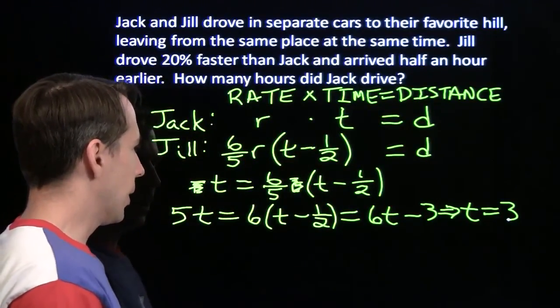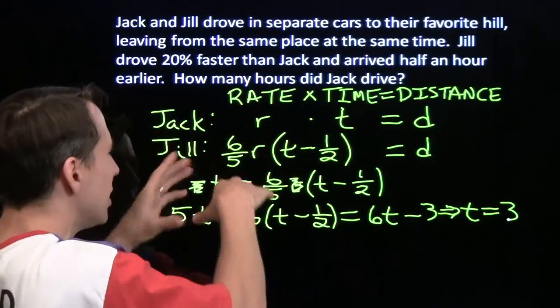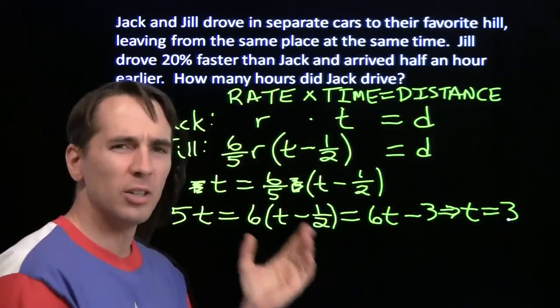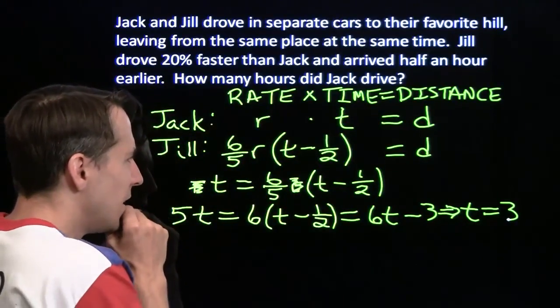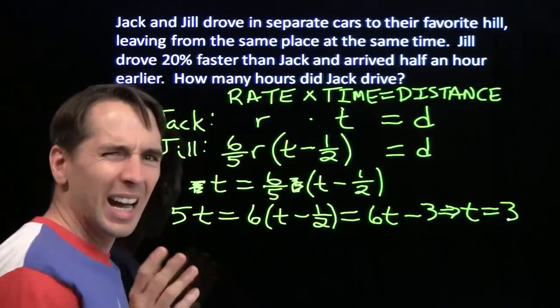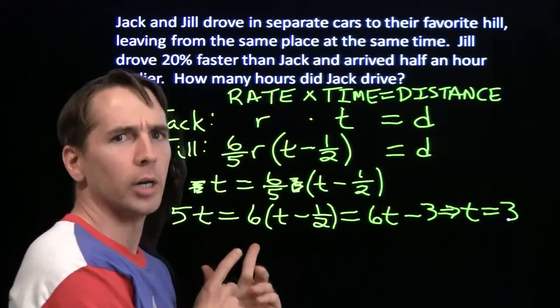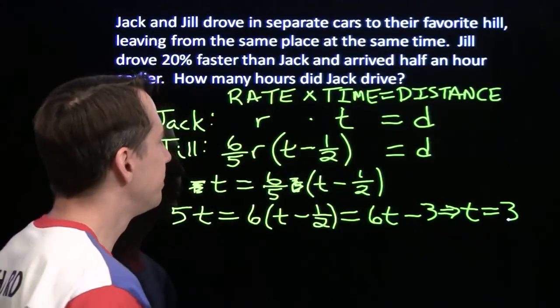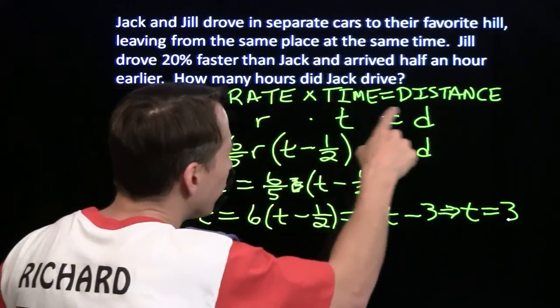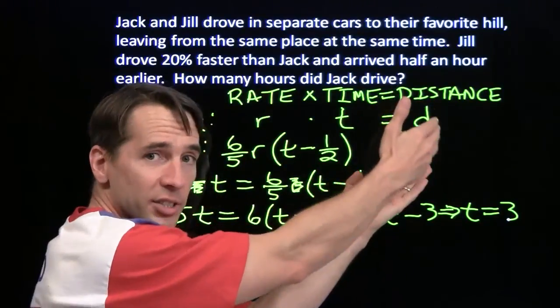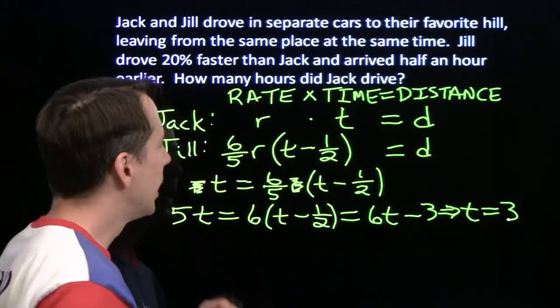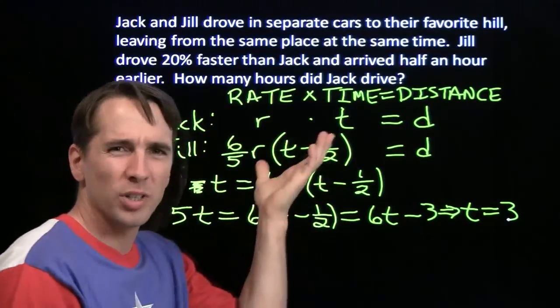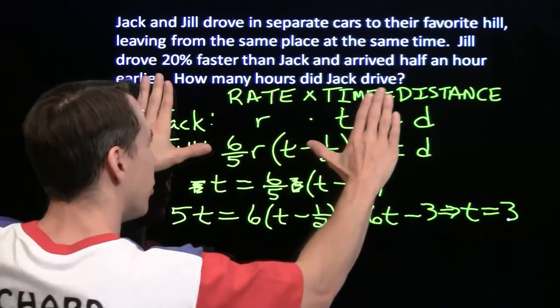That was a lot of work. Those were kind of scary equations. We do at least see that we start from rate times time equals distance, assign some variables, do some algebra. We can usually solve these rate problems, but I like to think more than I like to work. So I'd like to find a way to just think our way through this problem. Let's look back at this equation. We're trying to keep the distance constant here, because Jack and Jill are taking the same trip. We're going to change the rate, multiply the rate by 6 fifths. What's going to happen to the time?